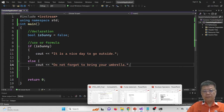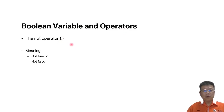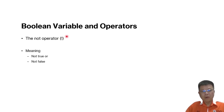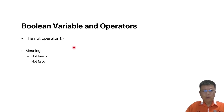Let's go back to the slides. Next, we learn about the NOT operator. If a value is true but you add the NOT operator, it will become false. If it is false and you add the NOT operator, it will become true.